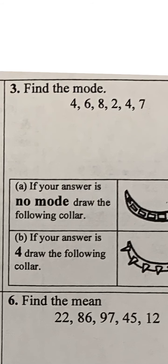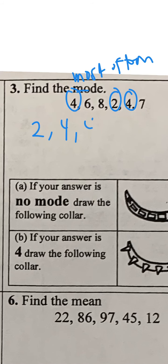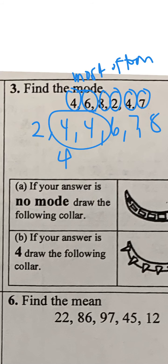Now we're going to do mode. Remember, mode starts with 'mo' and it sounds like 'most', so think of most often. Which one shows up the most? Let's put it in order: I have 2, then 4, then 4 again, then 6, then 7 and 8. Which one shows up more than once? It's 4. So my mode is going to be 4. If your answer is 4, draw the following.